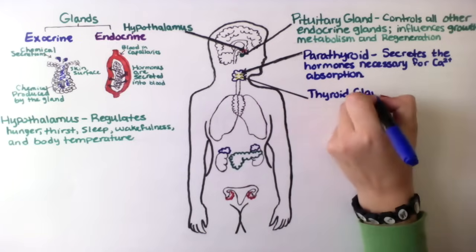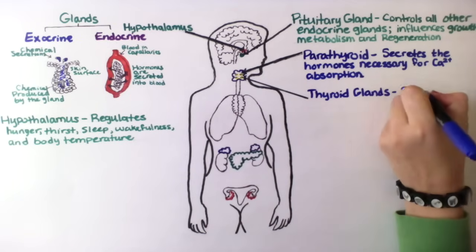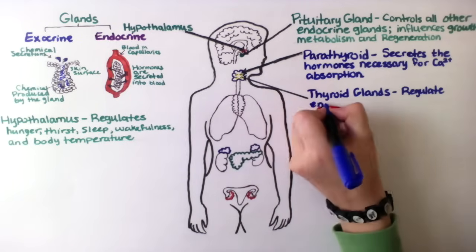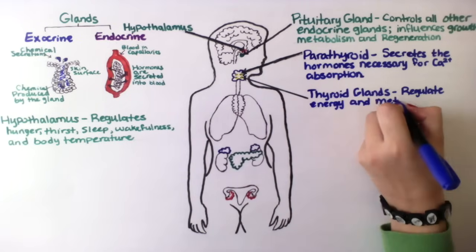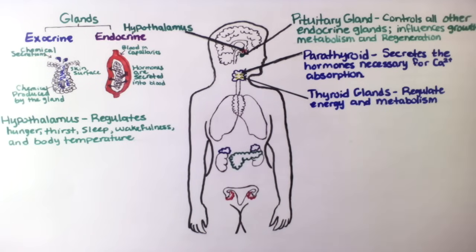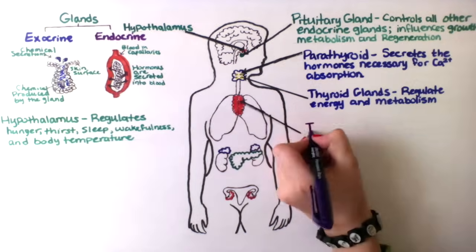The thyroid gland regulates energy and metabolism. It secretes the thyroid hormones T3 and T4, and calcitonin, which reduces calcium in the blood.